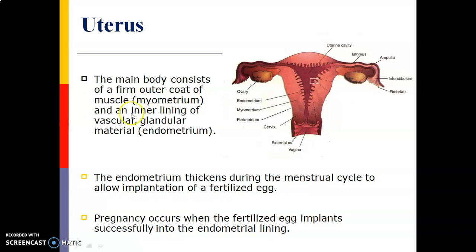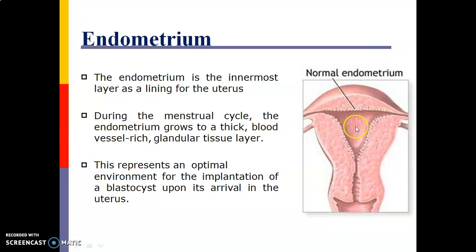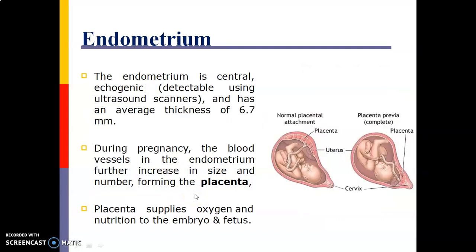The main body of the uterus consists of a firm outer coat of muscles called the myometrium and an inner lining of vascular glandular material called the endometrium. The endometrium thickens during the menstrual cycle to allow implantation of a fertilized egg. Pregnancy occurs when the fertilized egg implants successfully into the endometrial lining. The endometrium is the innermost layer of the uterus; during the menstrual cycle, it grows into a thick, blood-vessel-rich, glandular tissue representing an optimal environment for the implantation of a blastocyst upon its arrival in the uterus.